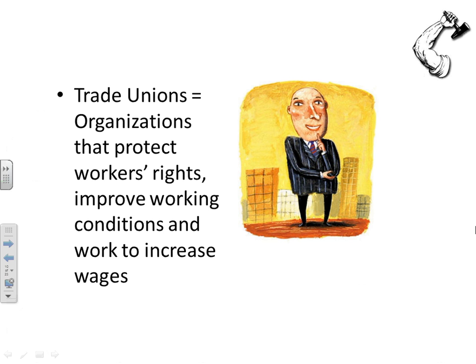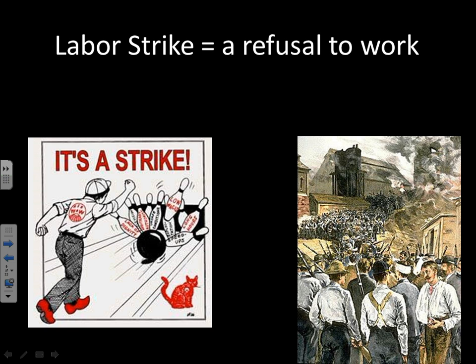Unions became quite popular during this time, though factory owners hated them and wanted them broken up. Unions grew as a movement throughout the Industrial Revolution. One of the unions' greatest strategies to bring leverage in negotiations was the labor strike. If all other negotiation processes had failed, unions would call a strike, and laborers who agreed with the union leadership would collectively refuse to work.